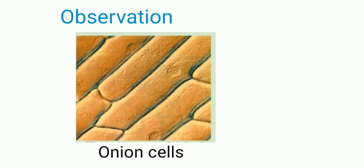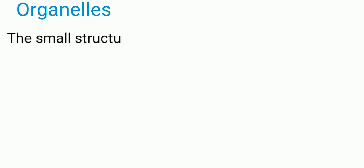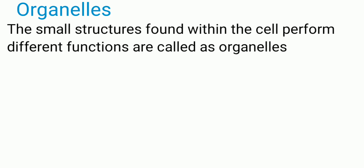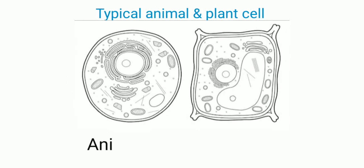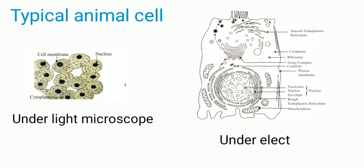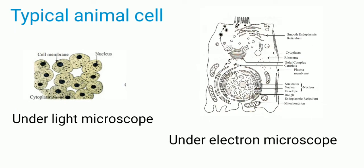Usually we use different stains like eosin or safranine to observe the specimen under the microscope to see them clearly. Cells always have the same basic structure, no matter what their function is or what organism they are found in. The small structures found within the cell that perform different functions are called organelles. These differ in number according to the function of the cell. A cell that includes all the organelles is called a typical cell.